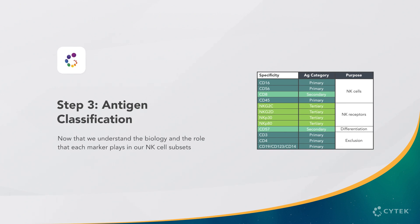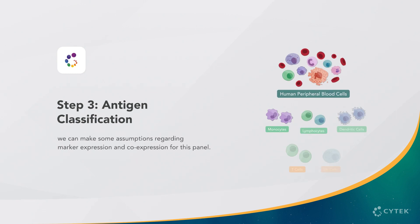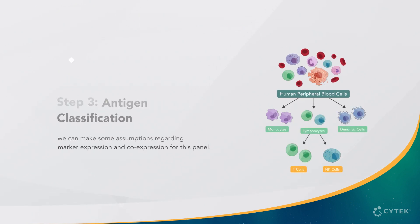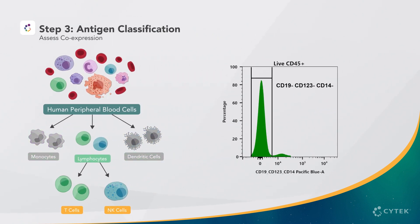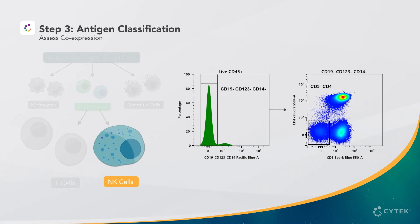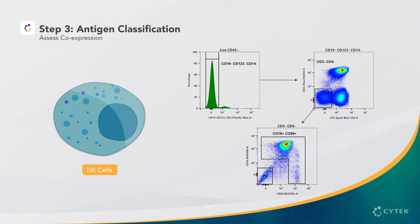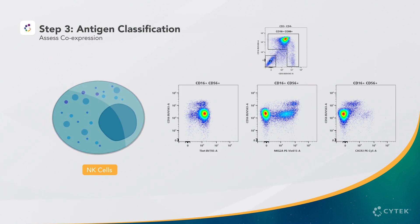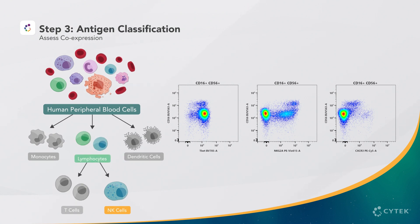Now that we understand the biology and the role each marker plays in our NK cell subsets, we can make assumptions regarding marker expression and co-expression for this panel. We first want to exclude several non-NK populations using a dump channel for CD19, CD123, and CD14 negative cells. We also know NK cells will be CD3 and CD4 negative. We can then subset into target cells based on varying levels of CD56 and CD16, and refine gating to visualize secondary and tertiary markers. Markers that are co-expressed will need to be assigned to fluorochromes with minimal spread, which we will cover in the next video.